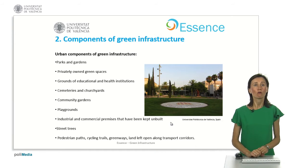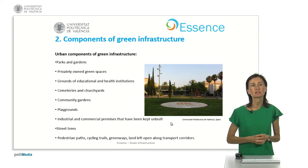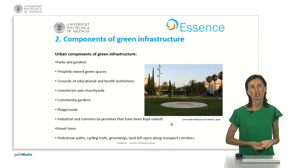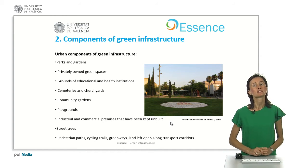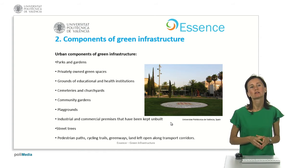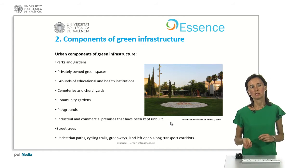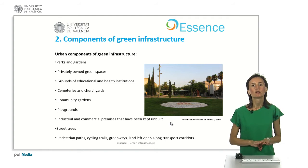With regard to the urban components of green infrastructure, we can have public parks and gardens, privately owned green spaces like domestic gardens, grounds of educational and health institutions, cemeteries and churchyards, community gardens, playgrounds, industrial and commercial premises that have kept and built green areas, street trees, and the connectors between these areas like pedestrian paths, cycling trails, greenways, or land left open along transport corridors.